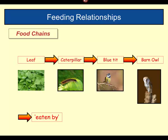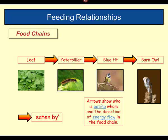Here we've got our complete food chain: leaf, caterpillar, blue tit, barn owl. The arrows show who is eating who — the barn owl is eating the blue tit, who is eating the caterpillar, who is eating the leaf. But it also shows the direction of energy flow. Energy is flowing from the sun to the leaf, to the caterpillar, to the blue tit, to the barn owl.